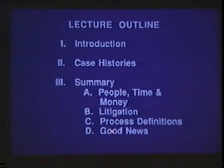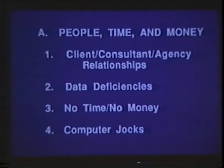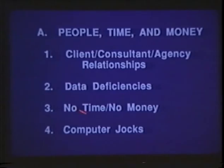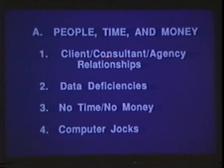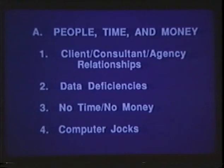Here are the last four slides of this lecture, covering a slide each on these topics. Let me take people, time, and money and quickly go through that in summary fashion. People, time, and money: client-consultant-agency relationships; data deficiencies; no time, no money; and a problem with what I'll call computer jocks. The consultant is frequently hired by a client who has certain goals, and that work is presented to an agency which may have somewhat different perspectives. So in applying these models, these discussions continually have to be addressed to get out from between that rock and a hard place. Data deficiencies is something that always will be argued about — it's a matter of demonstrating when it is sufficient to agencies and to clients. That argument will never end.